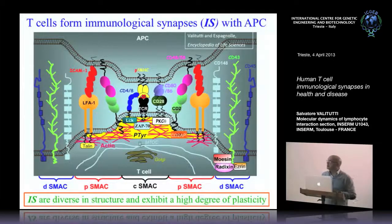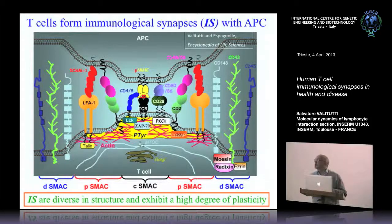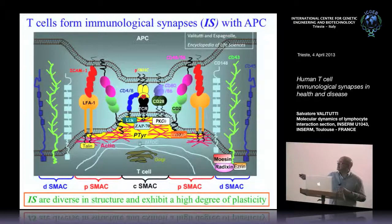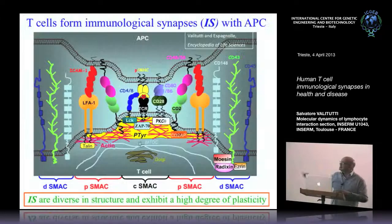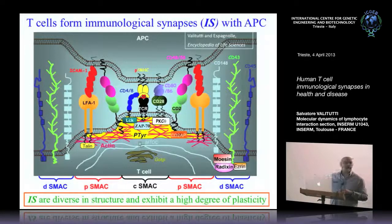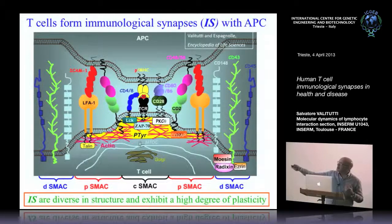Studies from different groups, starting from Avi Kupfer's group, Michael Dustin's group, and others, have put forth the notion that when the T-cell enters in contact with the APC, signaling pathways are not organized as I depicted in this scheme. Rather, signaling components, surface molecules, and intracellular structures get reorganized in a specialized signaling area named the immunological synapse.